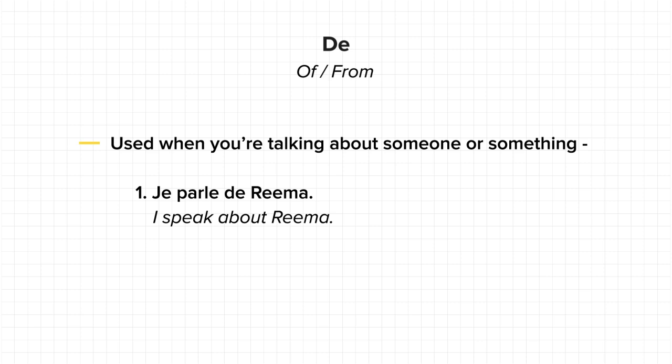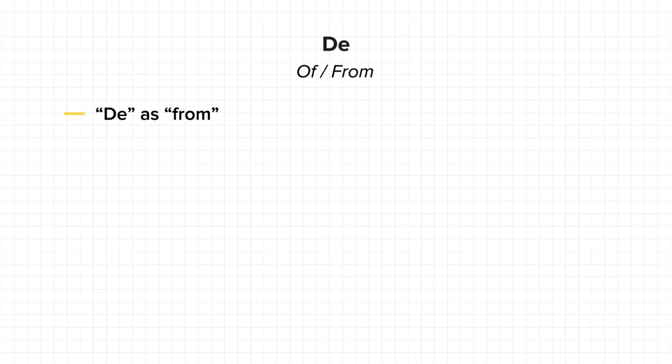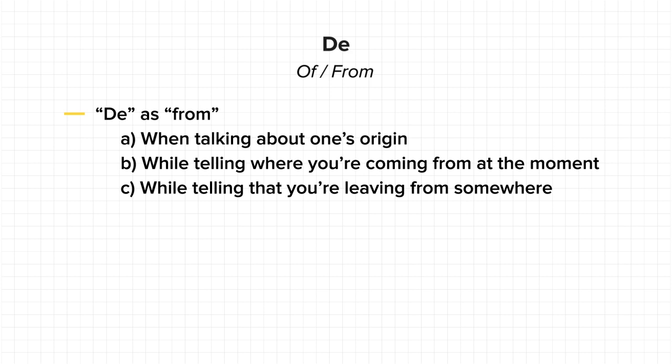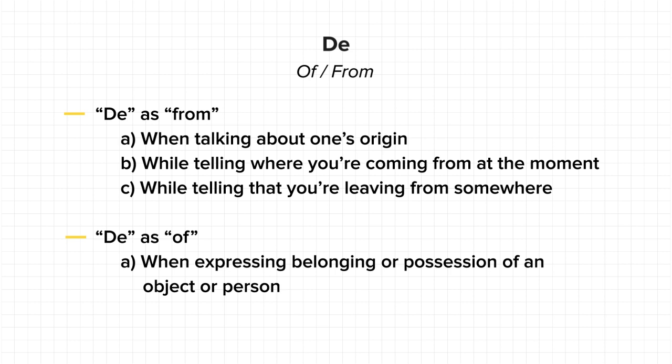Let's quickly recollect. First, we use 'de' as 'from' in the following cases: when talking about one's origin, while telling where you are coming from at that very moment, and while telling that you are leaving from somewhere. Second, we use 'de' as 'of' in the following cases: when expressing belonging or possession of an object or a person, and when talking about someone. Now you have understood 'de' very well.